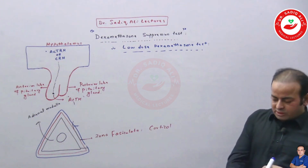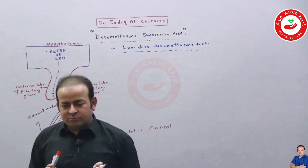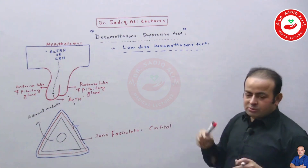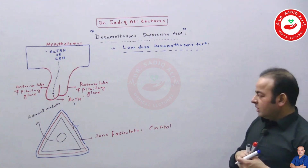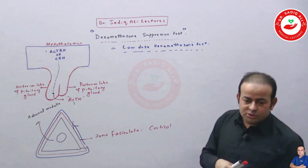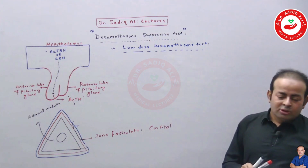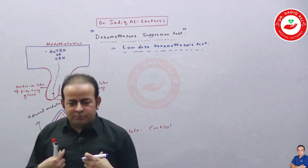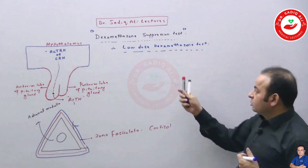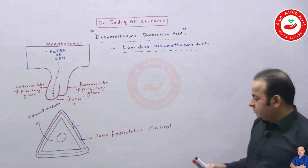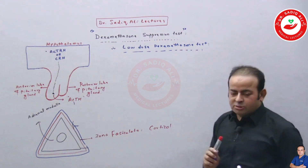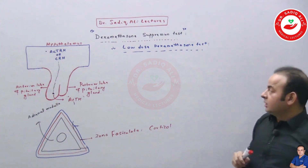In a normal healthy person, if you give dexamethasone from outside in low dose, serum cortisol will decrease. This is because dexamethasone increases circulating glucocorticoid levels, which negatively inhibits the adrenal gland's natural cortisol synthesis. So in a healthy person, giving dexamethasone will decrease the natural cortisol level.